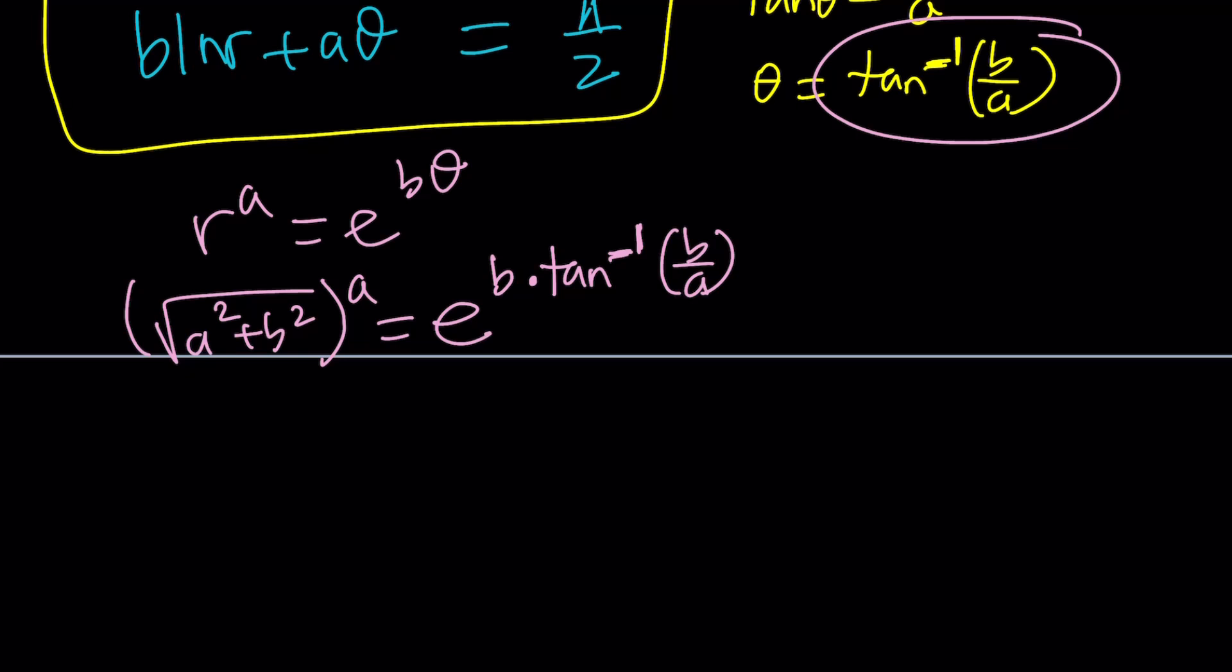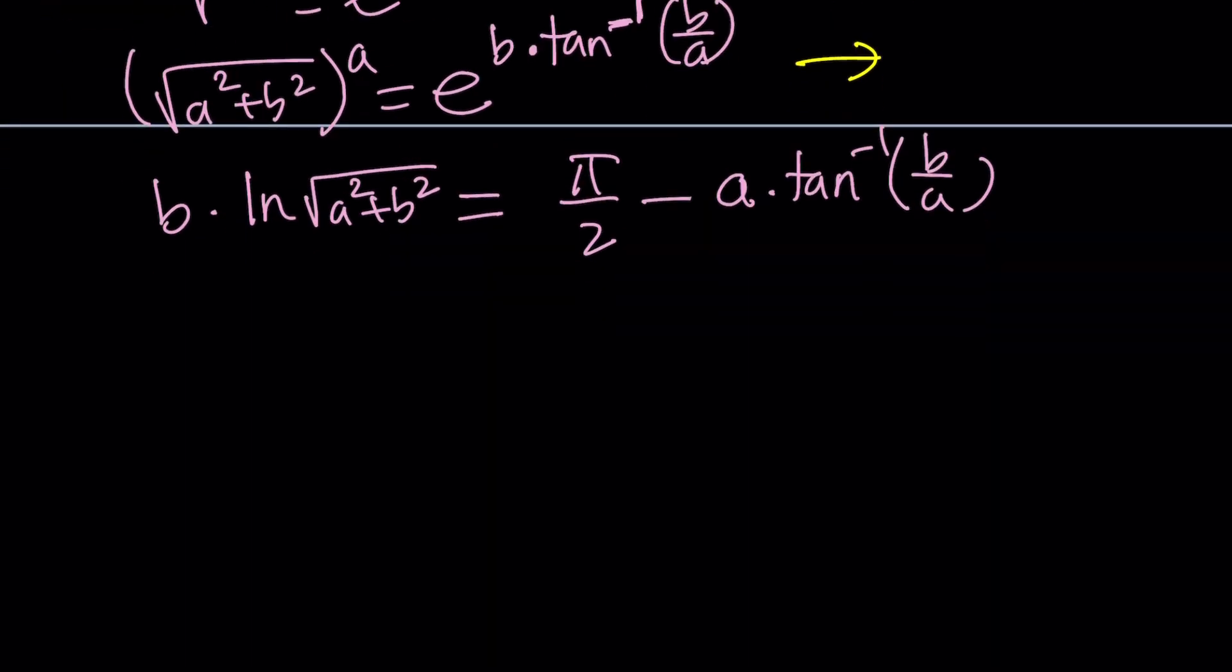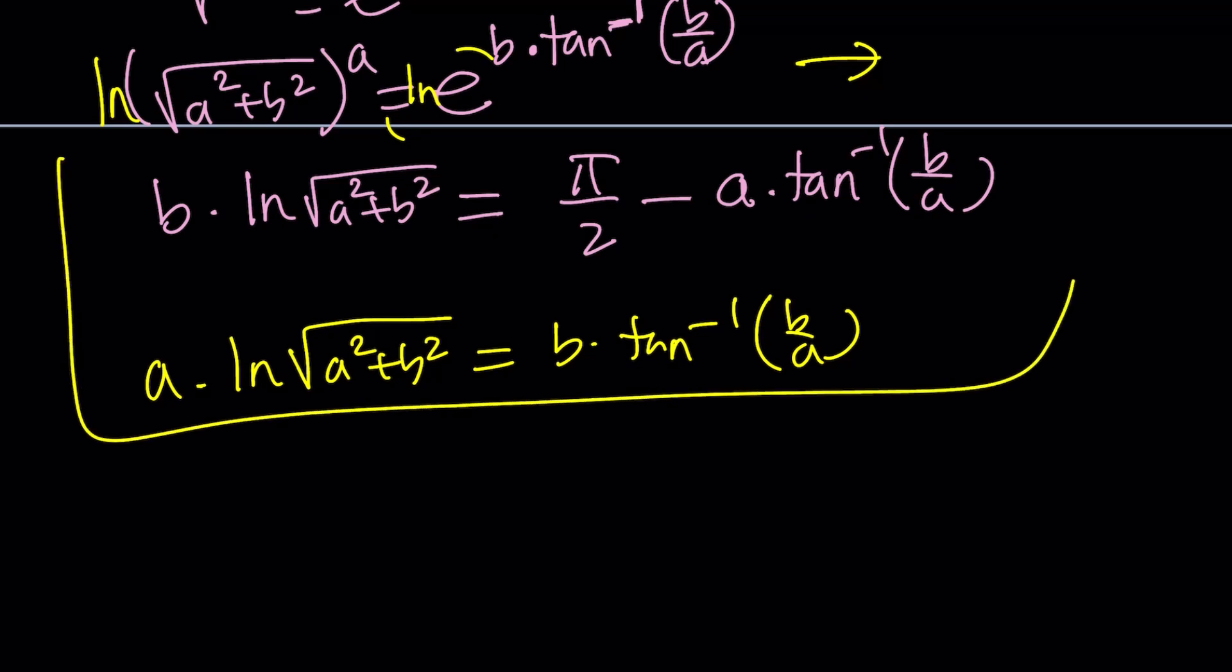Now the second equation is going to be B times ln R which is the square root of A squared plus B squared and then plus A theta and I want to go ahead and put that A theta on the right hand side so write it as pi over 2 minus A theta and theta will be replaced with tan inverse of B over A. I'm going to do a little bit of something. I'm going to ln both sides here so that I can bring down some powers and when I do I'm going to get A ln square root of A squared plus B squared equals B times tan inverse B over A. I did ln both sides here and here but ln E is 1 so it disappeared. Make sense? So we got a nicer equation and here's what we have so far. You like it? Okay.